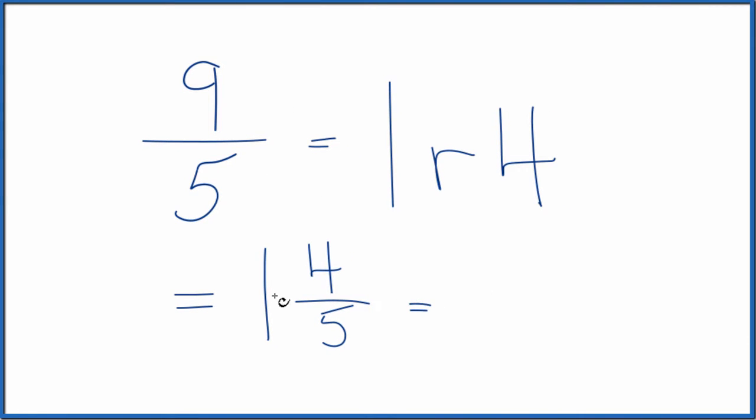We can check this too. 1 times 5, that's 5. 5 plus 4, that gives us 9. Carry the denominator across, 9 fifths, just like we got before.